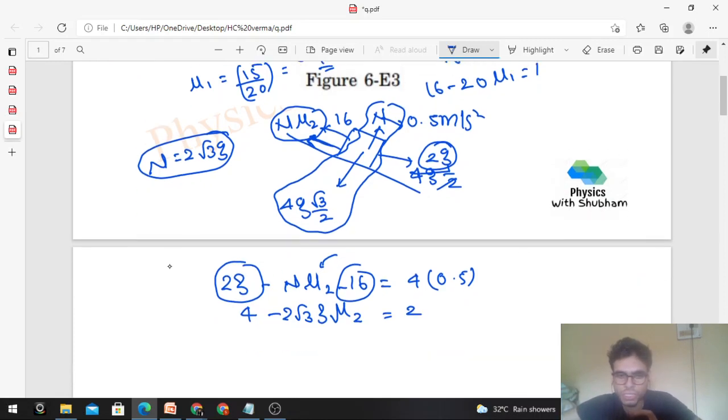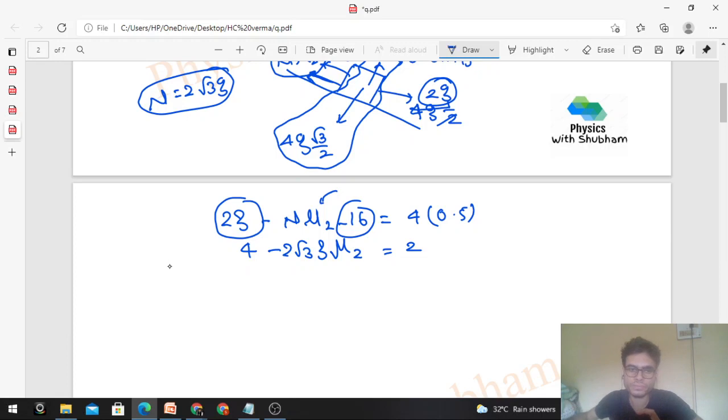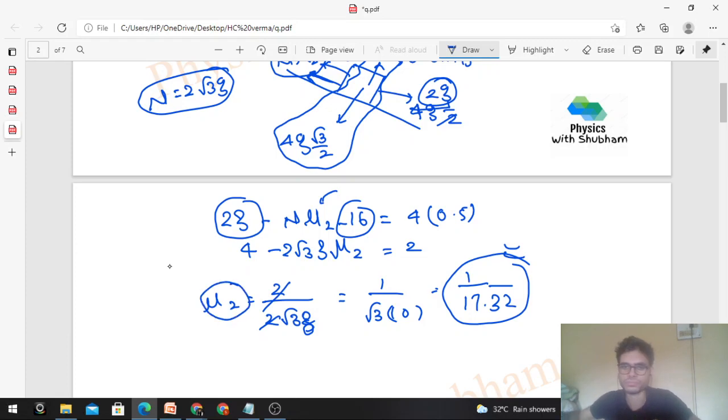N's value we know which is 2 root 3 into g. So it is μ2 minus 16. Taking g as 20, so 20 minus 16 is 4. And this is minus, that should be equal to 2. So this is coming out to be 2 upon 2 root 3 into g. That is the value of μ2. So 2 cancels out. This is coming out to be 1 by root 3 into g. Taking g as 10, 1 upon root 3 is 1.732, so 17.32. Calculate this value, this is μ2's value.